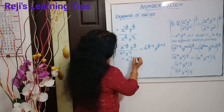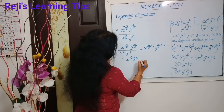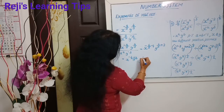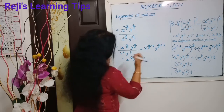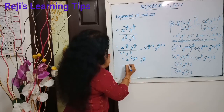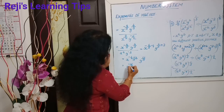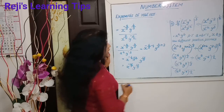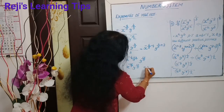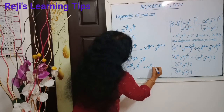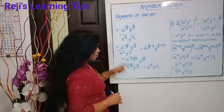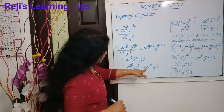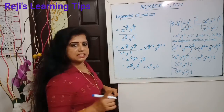y raised to: 3 into 3 is 9, and 9 plus 4 means that is 13 by 3. Okay, that is equal to x raised to minus 16 by 3, y raised to 13 by 3. That is equal to x raised to a, y raised to b. So instead of a we write minus 16 by 3 and for y, b, we write 13 by 3.